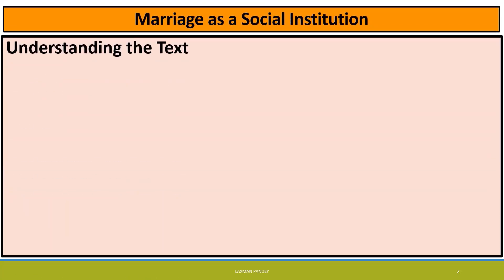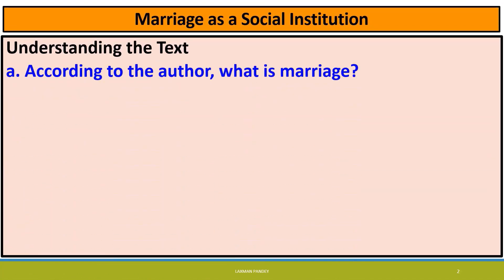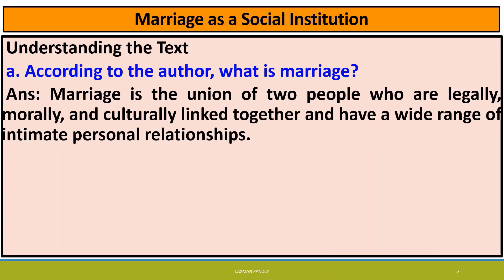Understanding the text. Number A: According to the author, what is marriage? Marriage is the union of two people who are legally, morally and culturally linked together and have a wide range of intimate personal relationships.